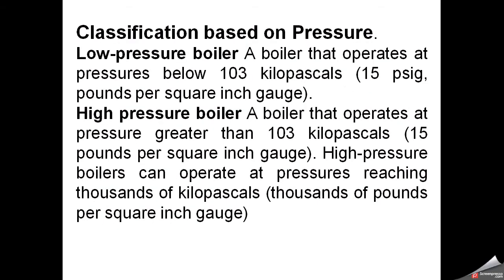Classification based on pressure. Low pressure boiler operates at pressure below 103 kilopascal or 15 pounds per square inch gauge. High pressure boiler operates at pressure greater than 103 kilopascal or higher than 15 pounds per square inch gauge.